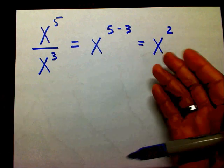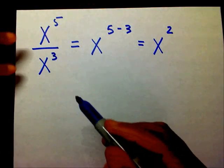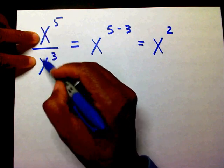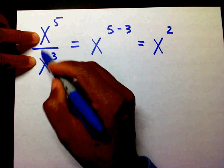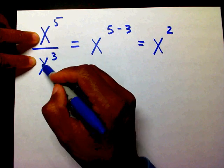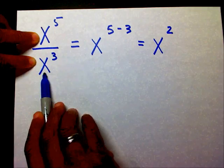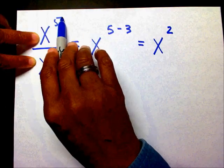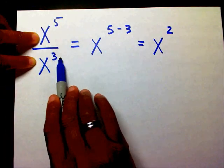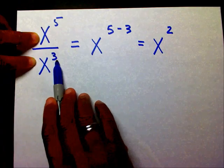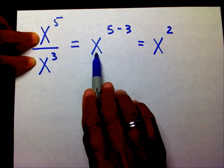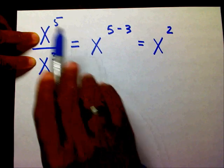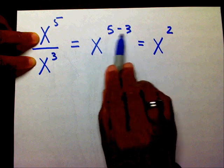What all of this is basically saying is that if you have two like bases that are being divided — an x here and an x here — I need to subtract my exponents. I keep my base the same, and I say 5 minus 3, the numerator minus the denominator, the top minus the bottom. That's where I got x squared from.